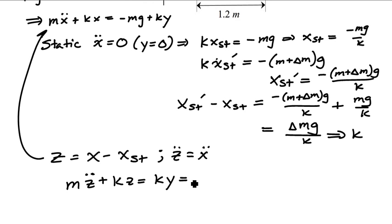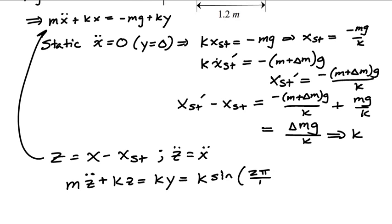I can now develop a profile for the road y, which is going to be y_naught times the sine of (2π divided by the wavelength L, times v times t), where v is the speed at which the trailer traverses the road.